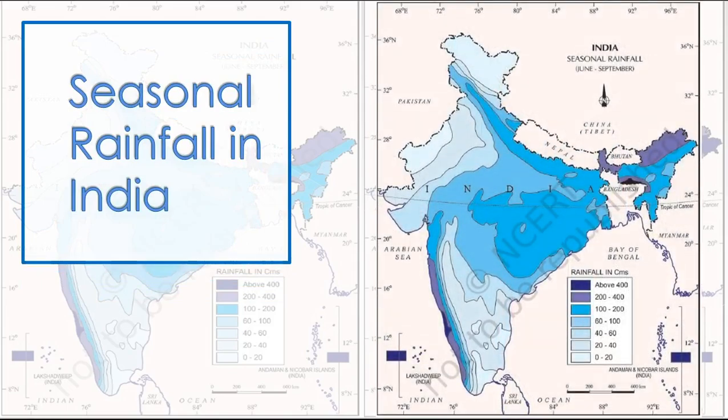Seasonal rainfall in India: the highest rainfall is recorded in Meghalaya, above 400 cm, and the lowest rainfall is recorded in the western side of Rajasthan.